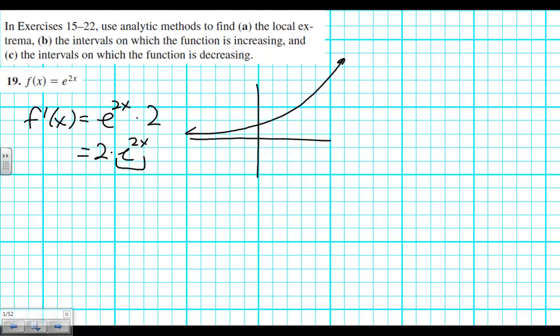It's never 0. It's never negative. So, f prime of x is always positive. Always greater than 0.